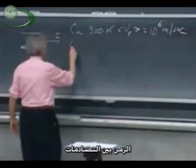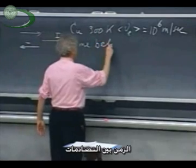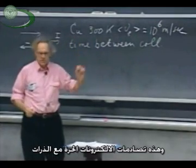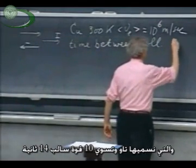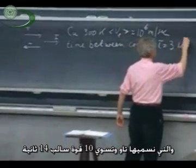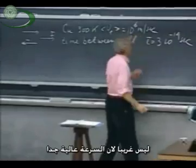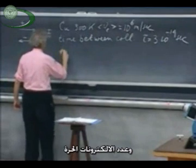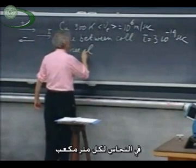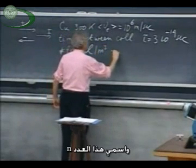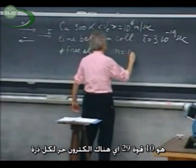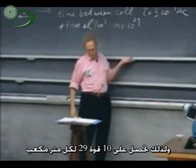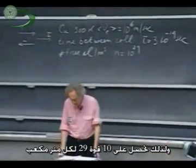The time between collisions, and this is a collision of the free electron with the atoms, I call it tau, is about three times ten to the minus fourteen seconds. No surprise, because the speed is enormously high. And the number of free electrons in copper per cubic meter, I call that number n, is about ten to the twenty-nine. There's about one free electron for every atom. So you get ten to the twenty-nine free electrons per cubic meter.